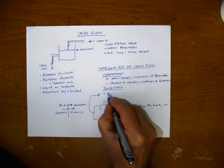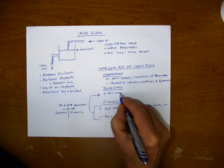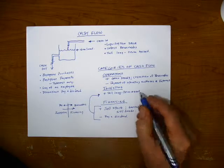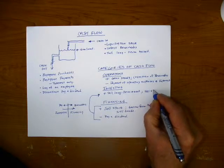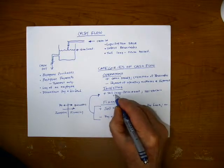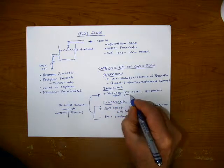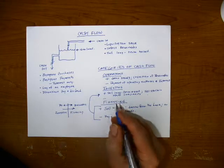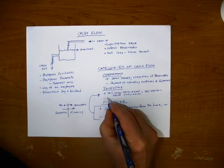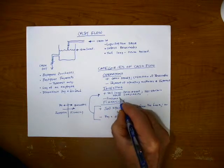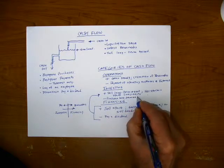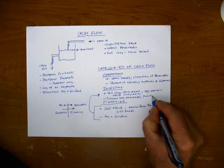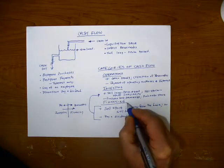Sell long-term asset investment. Or we sell stock in other companies. For example, negative investing would be purchasing a long-term asset investment. Or purchase stock in other companies.